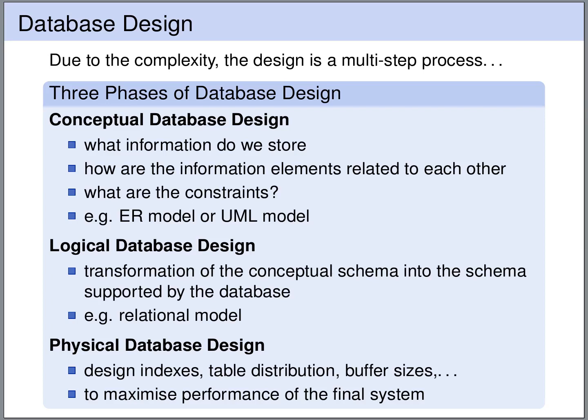The next step of the design is the physical database design. Here we optimize indices, decide on table distributions, buffer sizes, disk layout, and so on. The goal of this step is to maximize the performance of the final system. In this course we will be looking at the first two steps of database design, and we will leave the third step of the physical design to the database management system.